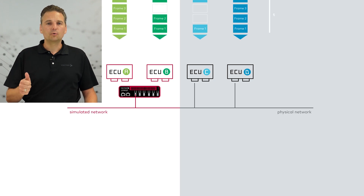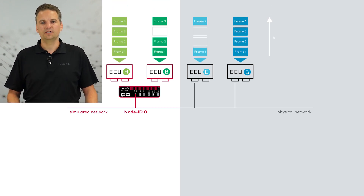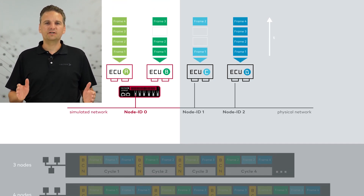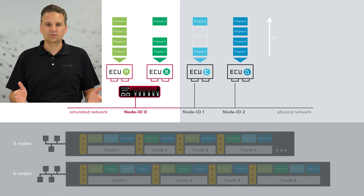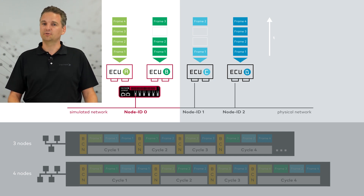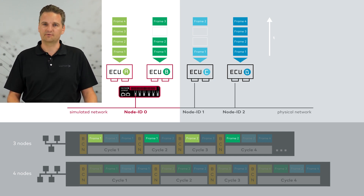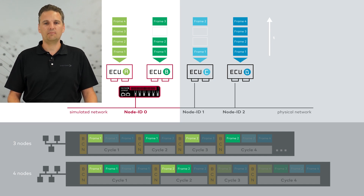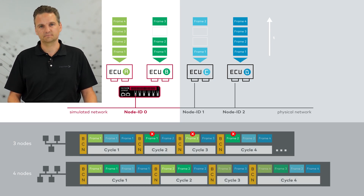There is only one node ID for each physical port. A straightforward approach, where simply multiple simulated nodes share one physical access to the network, inevitably leads to a changed communication behavior on the bus.